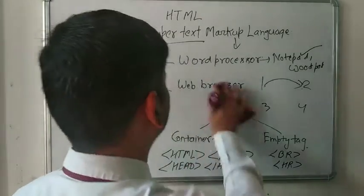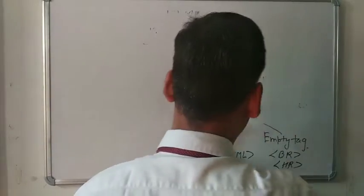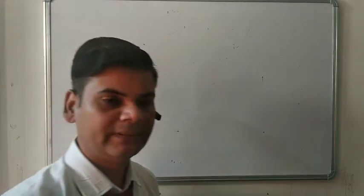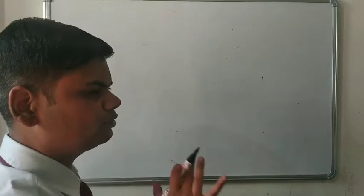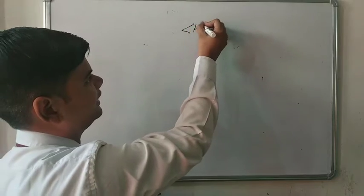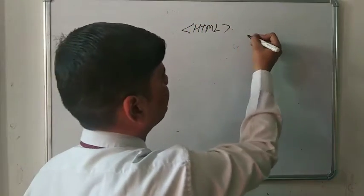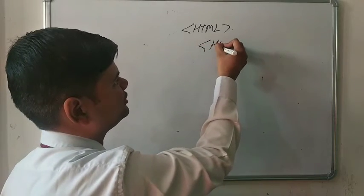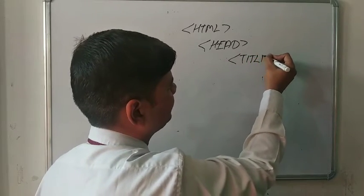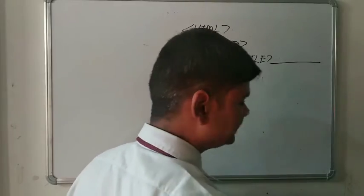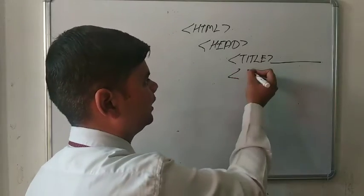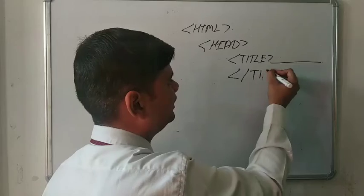Now we have to discuss one structure of an HTML program. This is important because you have to understand everything regarding HTML with the help of this program. We start the HTML program with the HTML tag, then we use the head tag, then after we use the title tag. We write down anything like 'this is the title page' within the title tag, and then we close the title tag using a backslash.